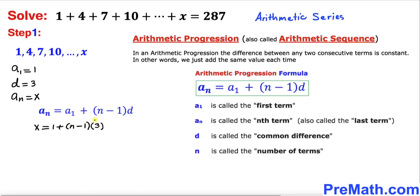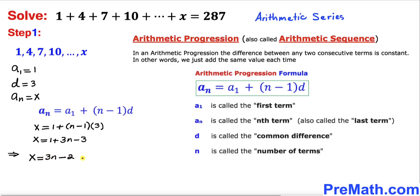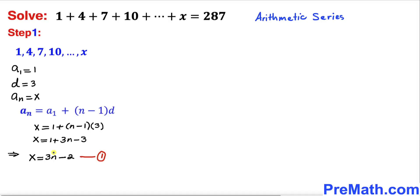Distributing the 3, we get x equals 1 plus 3n minus 3, which simplifies to x equals 3n minus 2. Let's call this Equation 1.